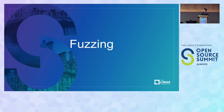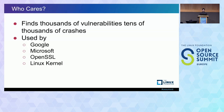To start, let's define what fuzzing is — why you should care about it, that sort of stuff. Who cares about it? Well, a lot of people do. Google does. We fuzz on hundreds of thousands of cores around the clock.